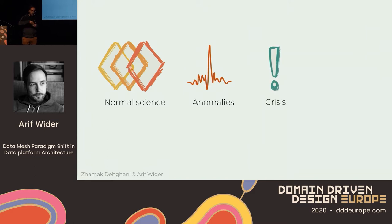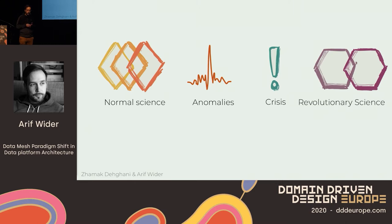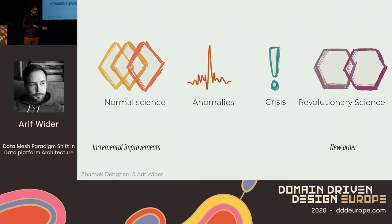When those anomalies become more and more frequent, this leads to the third phase: the crisis phase. In the crisis phase you start doubting whether the whole models and the whole way of thinking are actually correct. This questioning — really questioning everything — is what leads to revolutionary science and coming up with entirely new ideas. So basically, from incremental improvements on the left side, we come to an entirely new order on the right side.